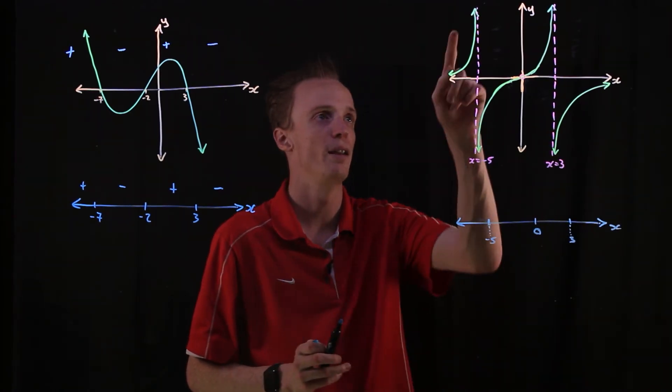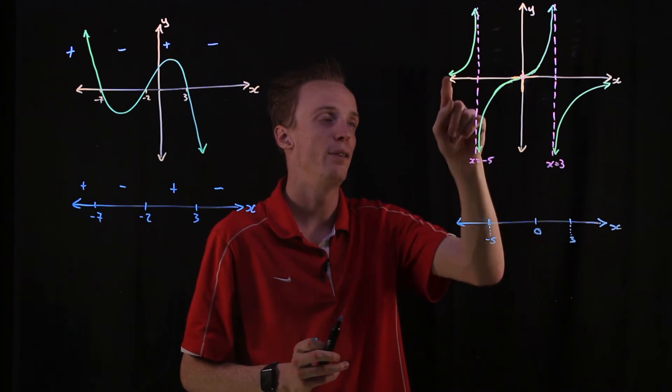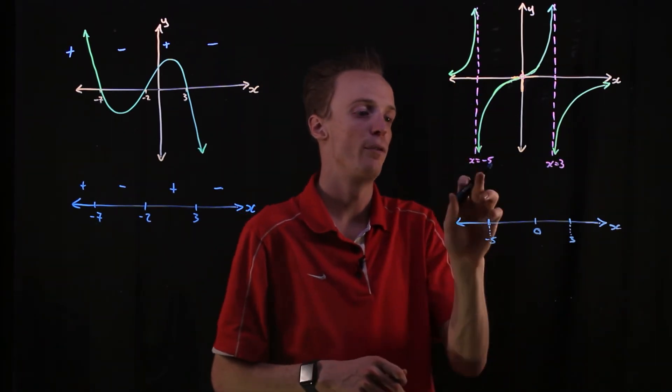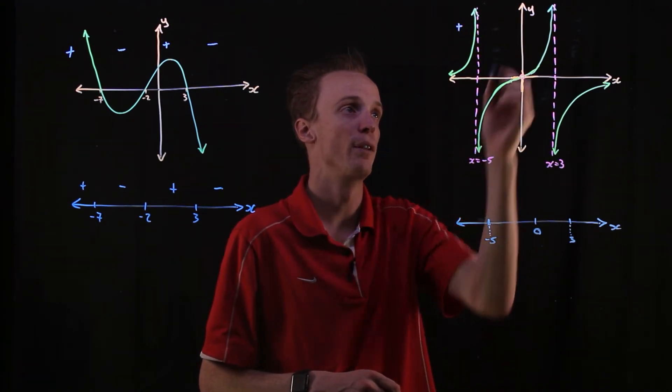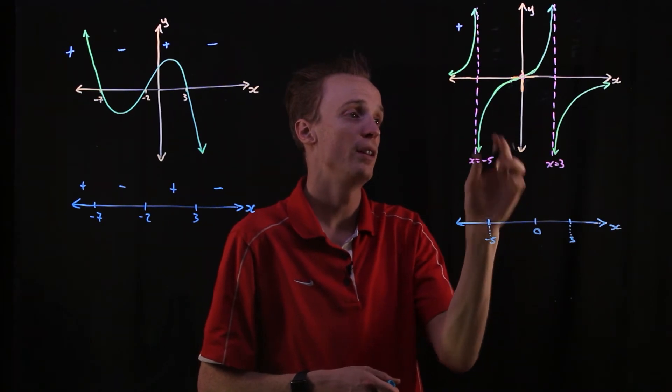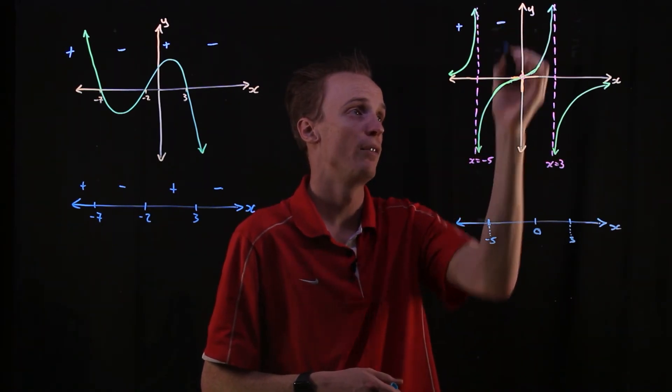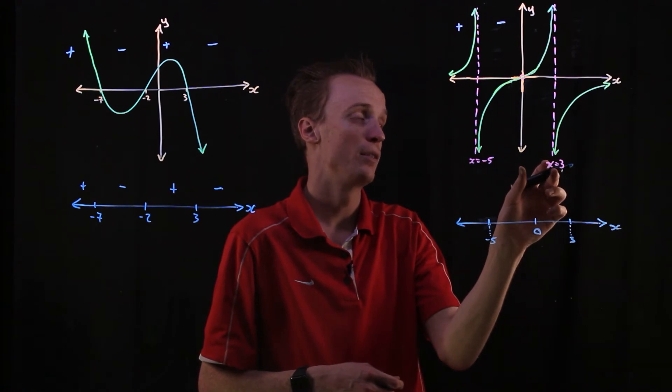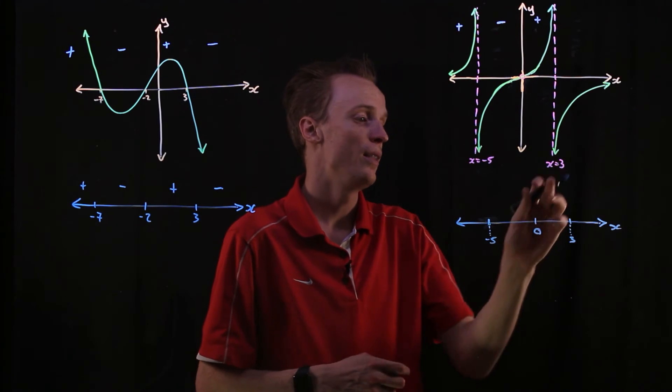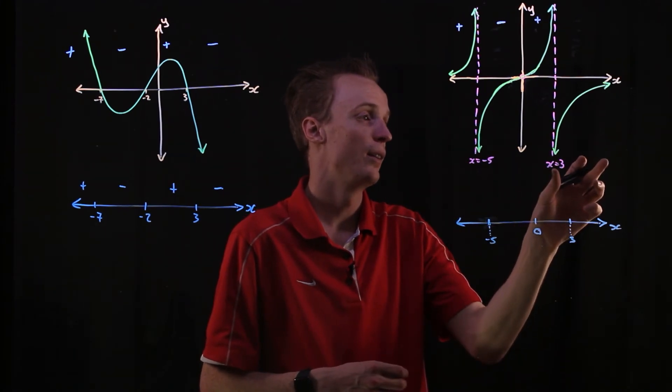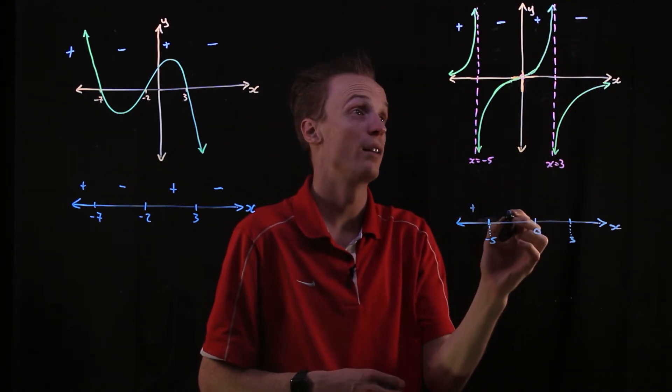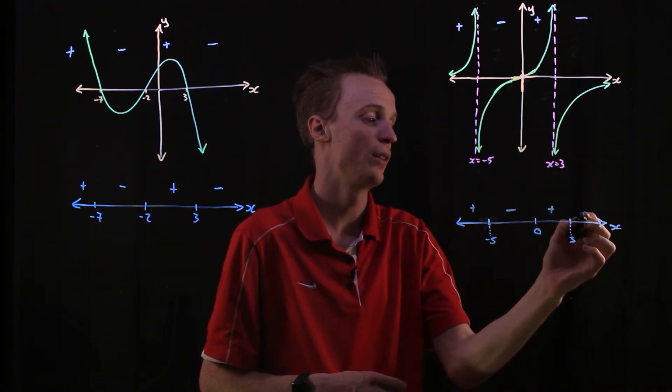So now we continue by breaking down where the graph is in terms of it being above or below this x-axis. So before the first asymptote, it's above, so it's positive in our y value. Then in between negative 5 and the origin, it's below, so it's a negative. Then between the origin and positive 3 in the x, it's above it again, so it's positive. And then over here, when x is greater than 3, it's below again, so it's negative. So we indicate that down here on our sign diagram.